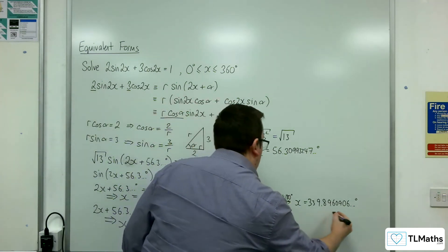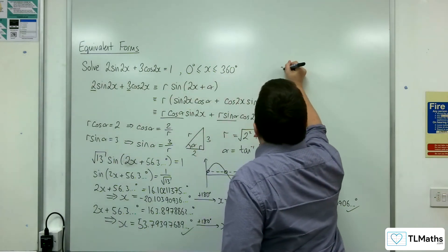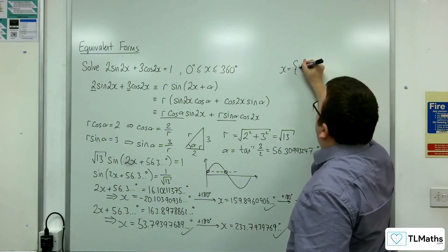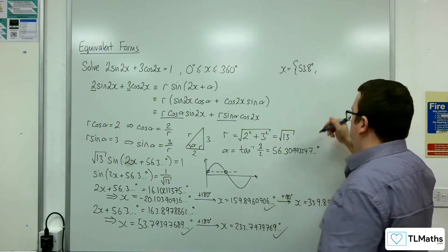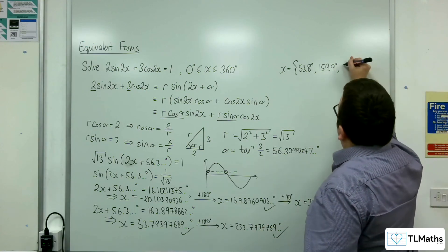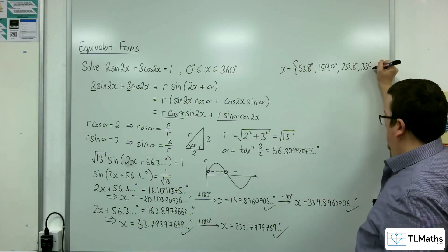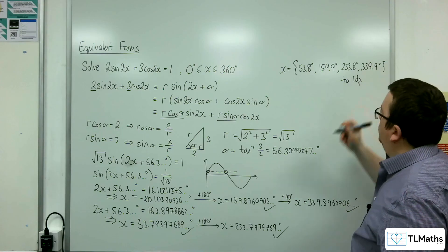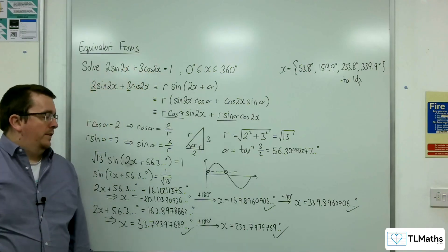So that one, that one, that one, and that one are the four solutions I'm looking for. The lowest is 53.8 degrees, then 159.9 degrees, then 233.8 degrees, and then 339.9 degrees to one decimal place. And that is how we can find the four solutions to this original problem using the equivalent forms.